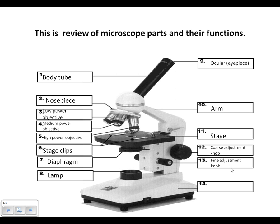Part thirteen is the fine adjustment knob. It sharpens your image and makes it really clear. After you're finished with low power objective, once you've gone to medium and high power objectives, you only use your fine adjustment knob.